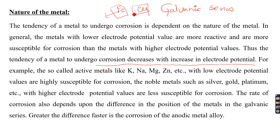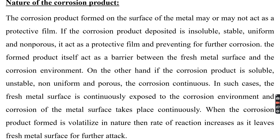For example, take iron with gold. The difference in electrode potential between iron and gold is higher compared to iron and copper. So when both are exposed to the atmosphere, iron coupled with gold will undergo corrosion more readily than iron coupled with copper. As the difference in electrode potential of the two metals increases, the corrosion of the anodic metal increases.